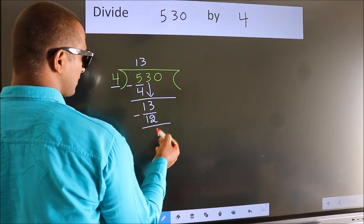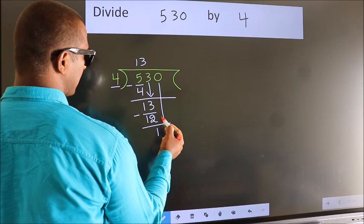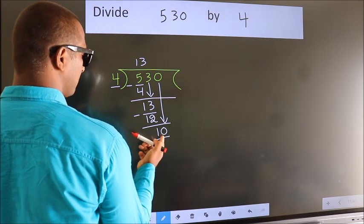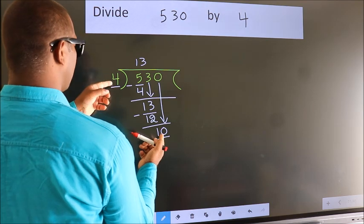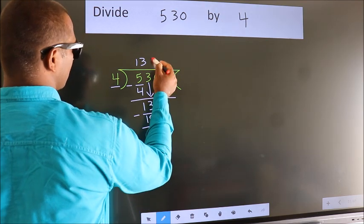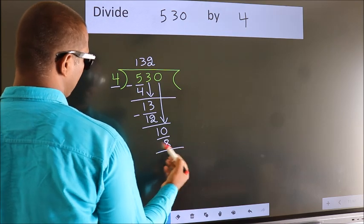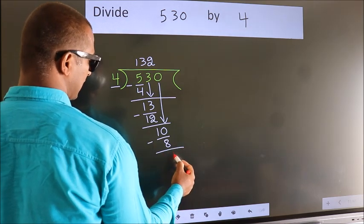After this, bring down the beside number, so 0 down, making 10. A number close to 10 in the 4 table is 4 twos, 8. Now we subtract. We get 2.